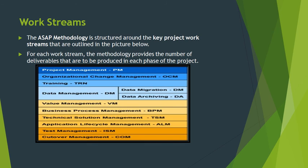The ASAP methodology is structured around key project work streams outlined in a picture. For each work stream, the methodology provides the number of deliverables that are to be produced in each phase of the project. You can see this project management chart here which we can go through.